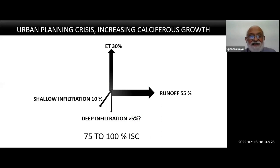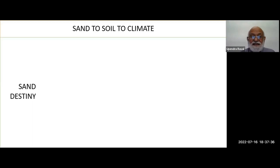After 30 to 50 years of urbanization, deep infiltration drops to 15% and shallow infiltration to 20%. Runoff is 30% — the 80% has gone down to 35%. This is the state of urban affairs, and all urban regions are drawing heavily on natural resources.